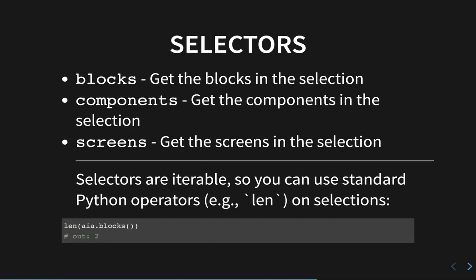The key thing in AIA tools is this idea of a selector. Screens, blocks, and components are the primary selectors you'll end up using when doing an analysis. They're logically named — blocks gives you all the blocks, components gives you all the components, and so forth. You can chain these together too — you could do screens, give me screen one, then give me the blocks on screen one. Or you can say give me all the button blocks and tell me all the screens they belong to. They're iterable, so you can do things like the length of the blocks output.